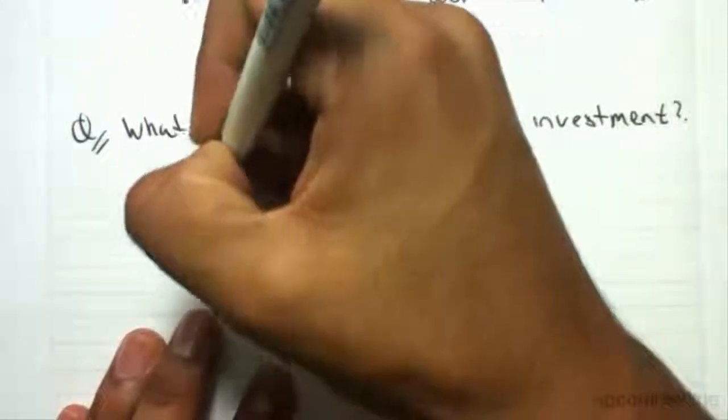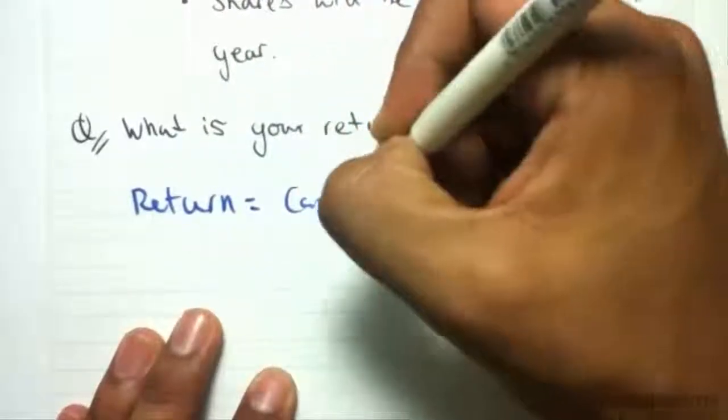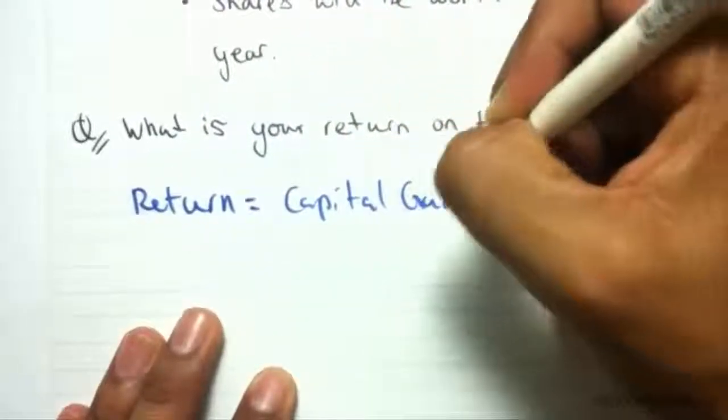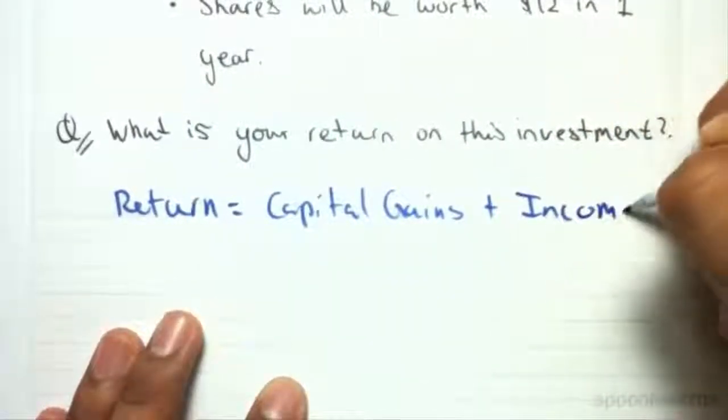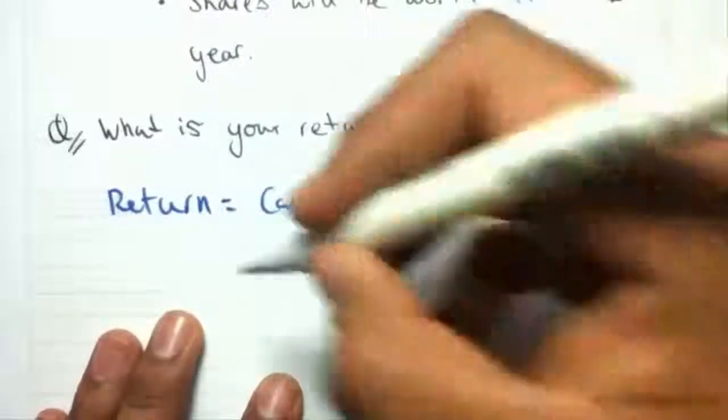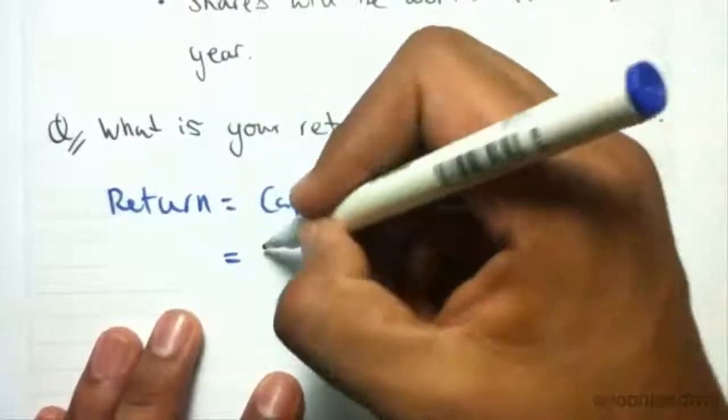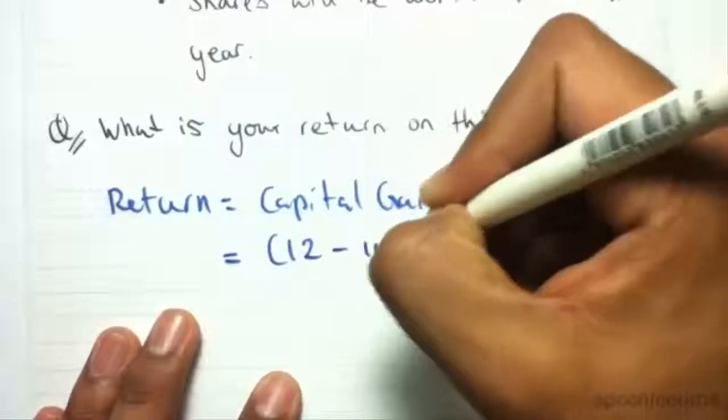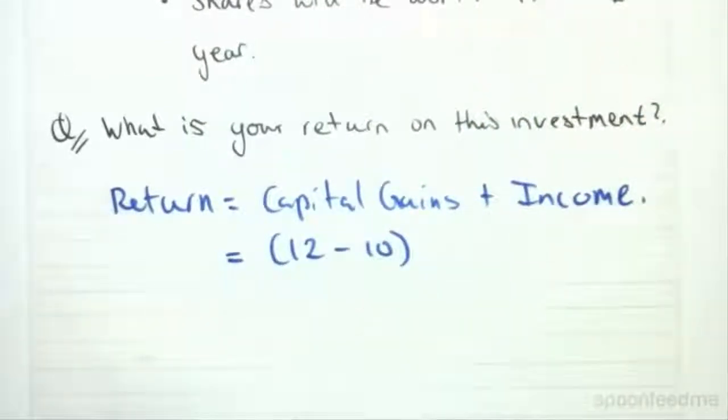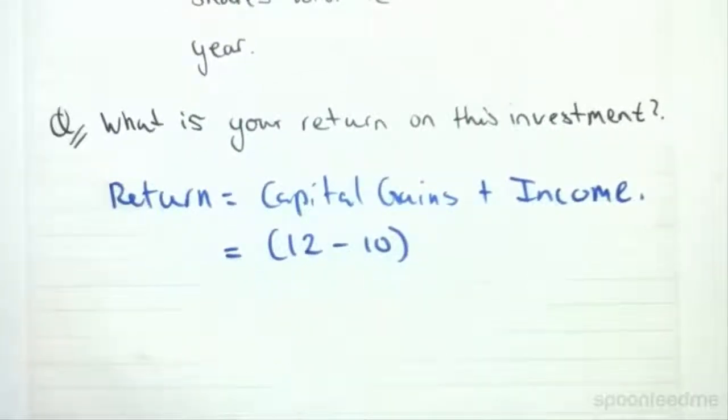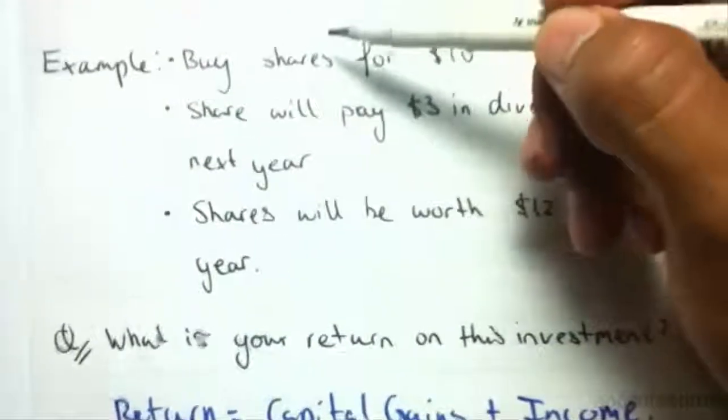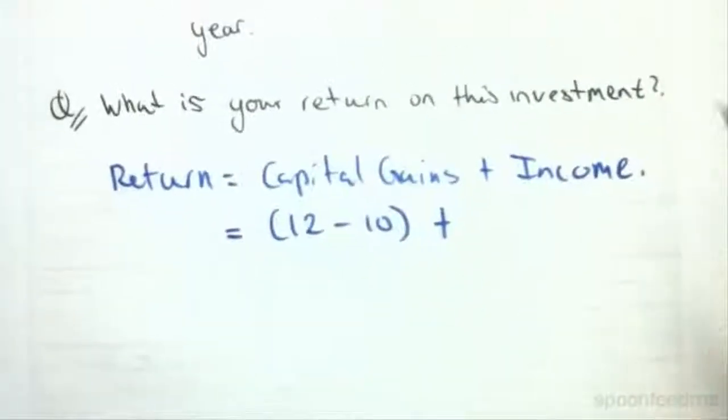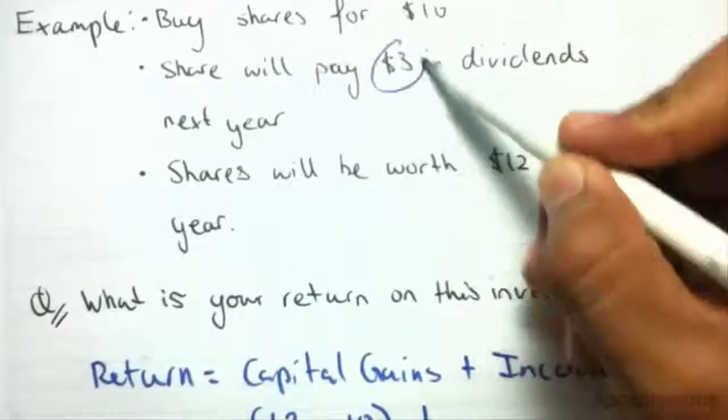Our return is equal to capital gains plus income. So what will the capital gains be? Well, the capital gains will be $12 minus $10. We buy it for $10 but we're going to sell it for $12, and that difference will represent our capital gains. The income generated by this asset will be $3.